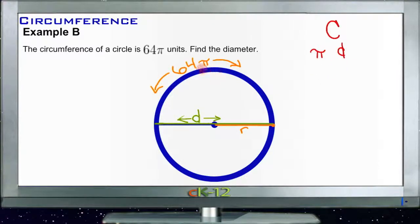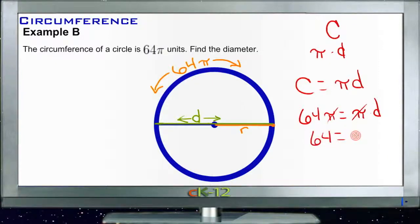And since we're given the circumference, we know that that 64 pi has got to be the same as pi times the diameter. So C equals pi D. Well, in that case, if 64 pi is the same thing as pi times something, in this case D, we'll just divide both sides by pi, and we get 64 equals the diameter. That's pretty straightforward.